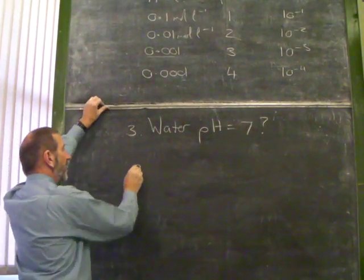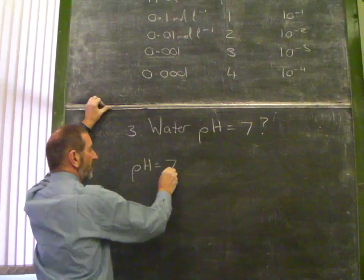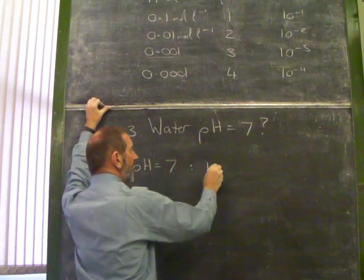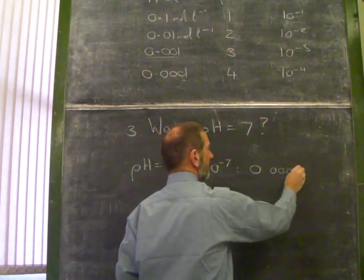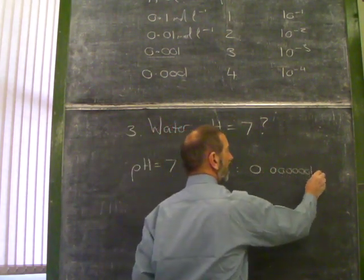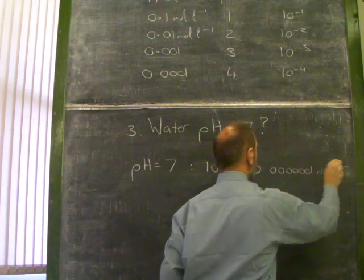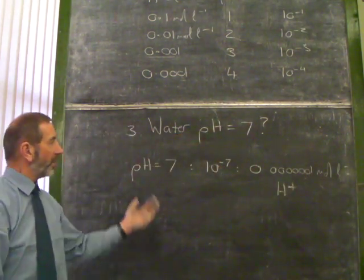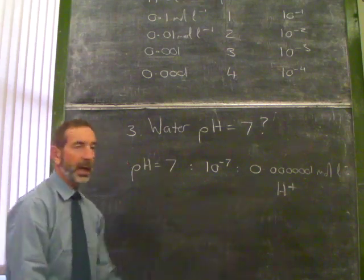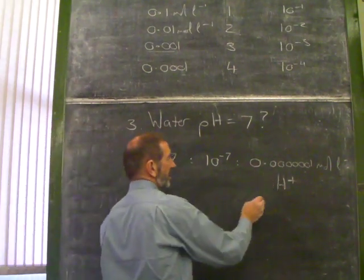Well, what does pH of 7 mean? If the pH is 7, that 7 is 10 to negative 7, which is 0.0000001 moles per litre. Hydrogen ion concentration is telling us what we know, that water has hydrogen ions, but very, very few. 10 to the negative 7.